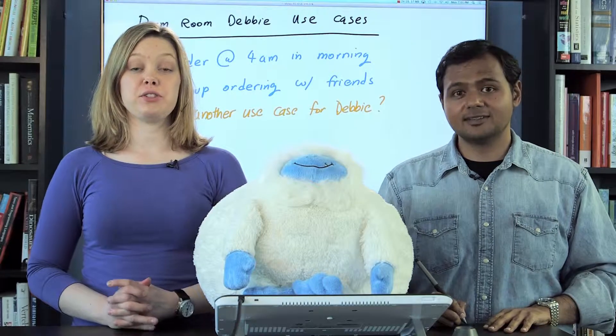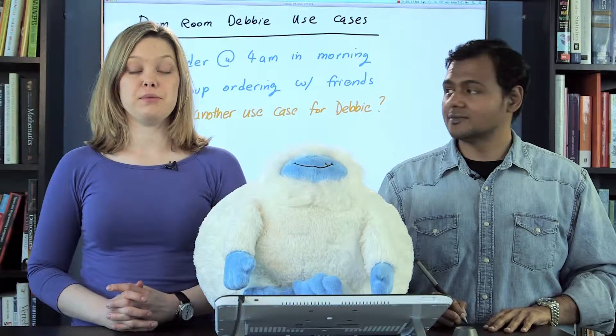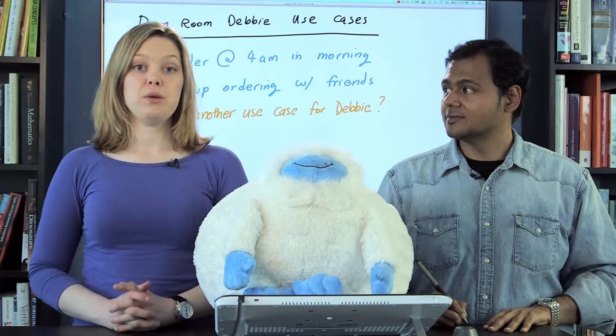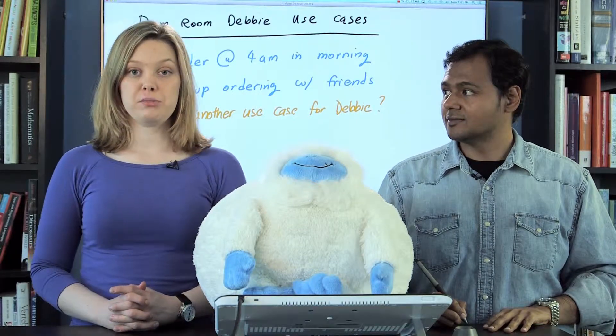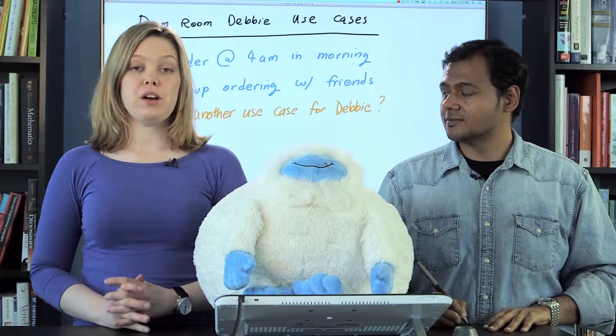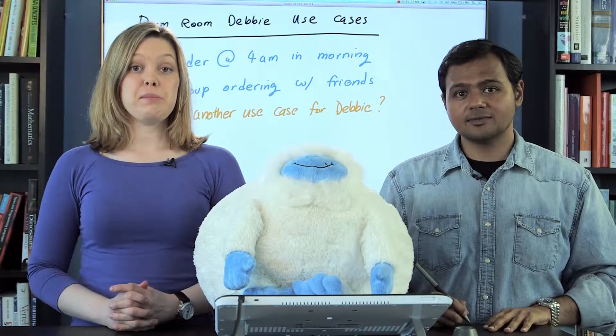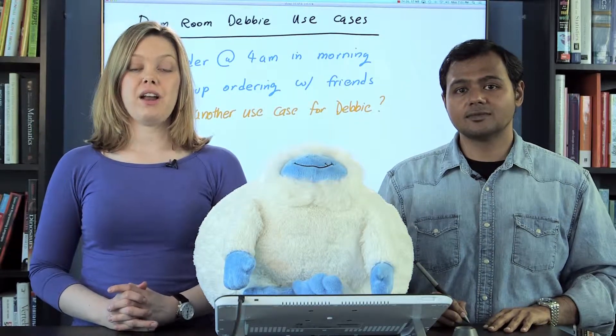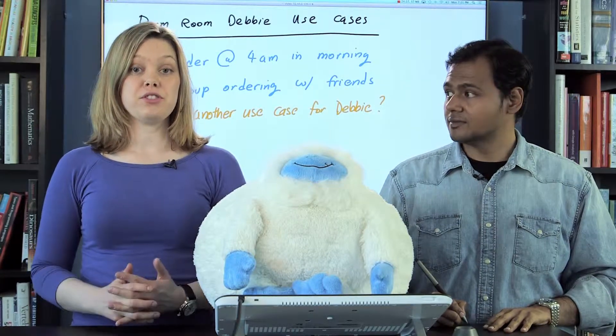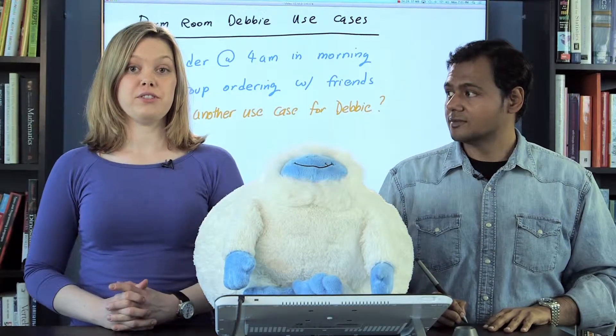Now we understand our persona for our pizza app, Dorm Room Debbie. We know all about her attributes and we understand her use cases. In a minute, we're going to talk about how we can build feature lists that are perfect for Debbie.